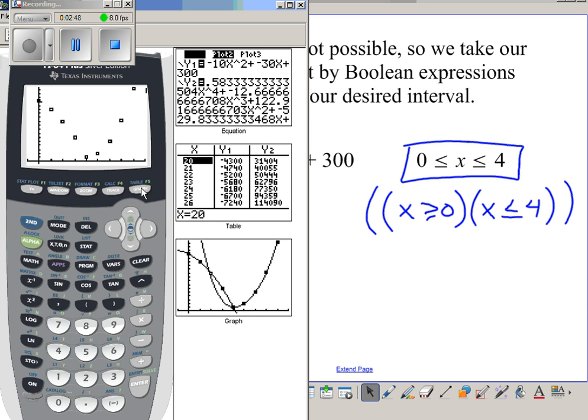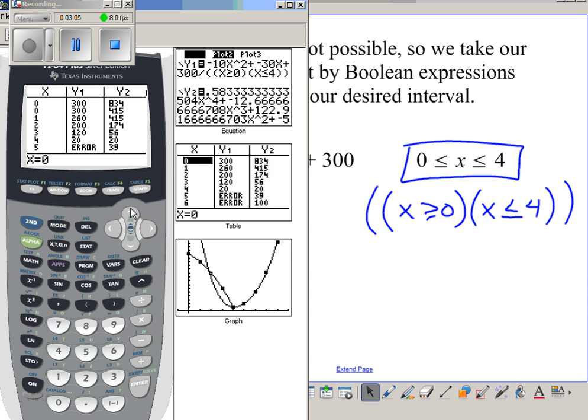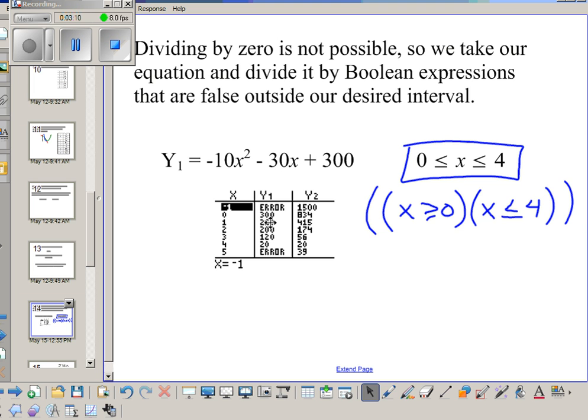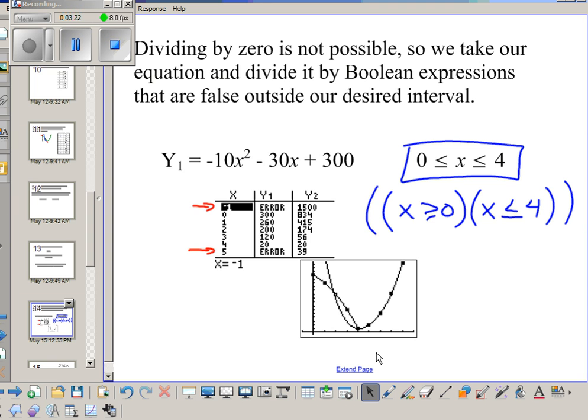So I go back to test, which is second math. I want less than or equal to four, and I can close this up. Now when I look at my graph, it is only graphing that portion from zero to four. If I look in my table, if I start at zero and go up by one, anything before zero will get me an error message, and anything after four will get me an error message because I will be dividing by zero.